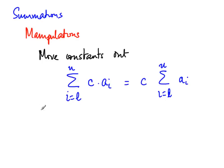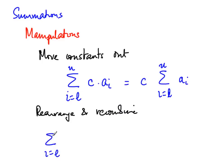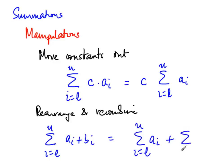The second simplification is to rearrange and recombine. If we have a summation of (aᵢ + bᵢ), we can separate it into the summation of aᵢ plus the summation of bᵢ. This lets us add the aᵢ separately and the bᵢ separately, yielding two simpler sums. This also works for subtraction: the sum of (aᵢ - bᵢ) equals the summation of aᵢ minus the summation of bᵢ.